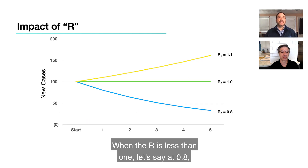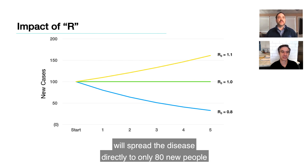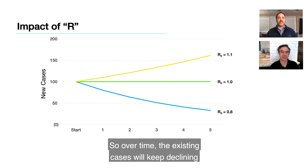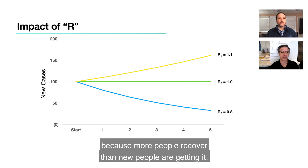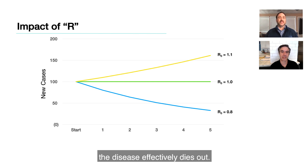When R is less than 1, say 0.8, this means that our 100 existing cases will spread the disease directly to only 80 new people in the time period. So over time, the existing cases will keep declining because more people recover than new people are getting it. If we wait long enough, there'll be so few cases that the disease effectively dies out.